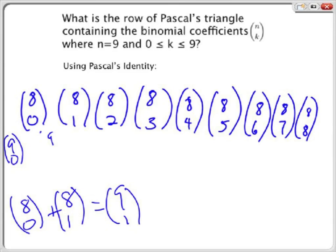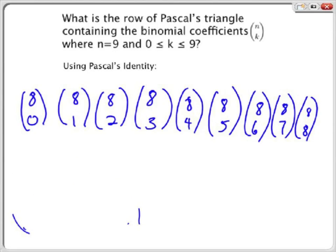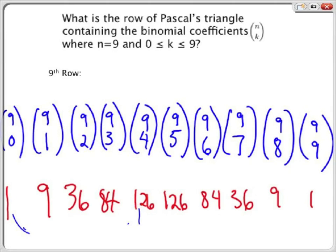So here you have 9 choose 1, since you are adding both the left and the right sides. And then you see the sequence will continue: 9 choose 2 will go here, and it will continue on until we get to the end. Your final answer will look like this for this problem.